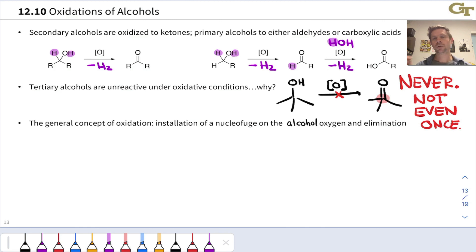The general mechanistic concept behind oxidation is installing a good leaving group at oxygen, such that an elimination across the carbon and oxygen in the alcohol establishes a CO double bond. Imagine we started with an alcohol, and through some series of elementary steps, we installed a good leaving group, a good nucleophuge linked to the alcohol oxygen.